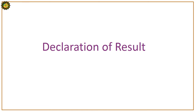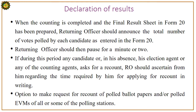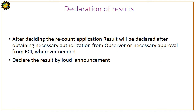Declaration of Result: When counting is completed and the final result sheet in Form 20 is prepared, the Returning Officer should announce the total number of votes polled by each candidate as entered in Form 20, then pause for a minute or two. If any candidate, their election agent, or counting agent requests a recount, the Returning Officer should ascertain the time required for submitting a written recount application. Options include requesting recount of postal ballot papers and/or polled EVMs of all or some polling stations. After deciding the recount application, the result will be declared after obtaining necessary authorization from the observer or approval from ECI where needed.